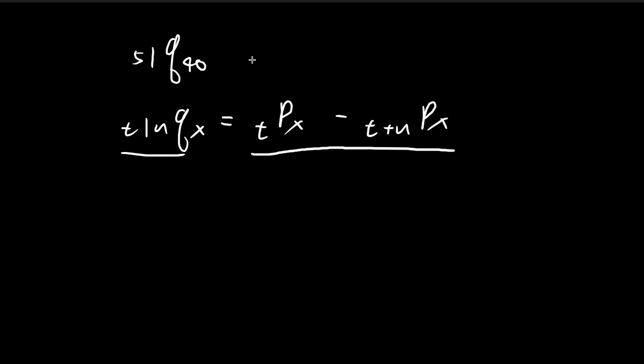I'm going to use this to help us evaluate this expression. Translating everything to our situation, this becomes 5p40 minus 6p40. So all we have to do is find 5p40 and 6p40.